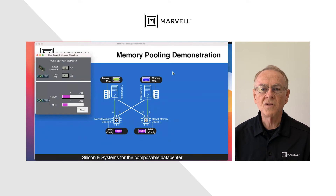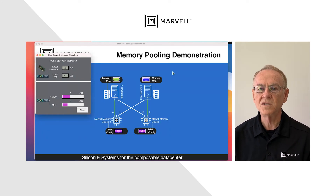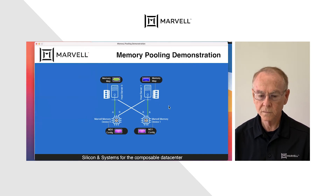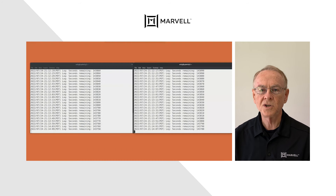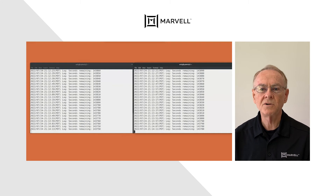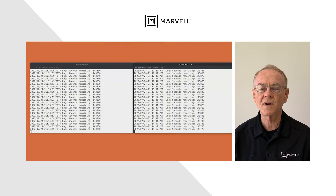Host zero's configuration is confirmed by the host view — it sees a total of 10 gigabytes of memory from the two devices. This screen shows tests running on both hosts: host zero on the left and host one on the right. We're using standard test tools that access all the CXL memory from both memory devices, putting them under stress and checking for errors.